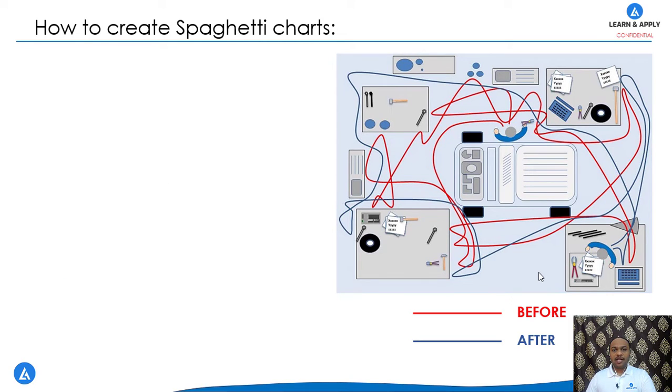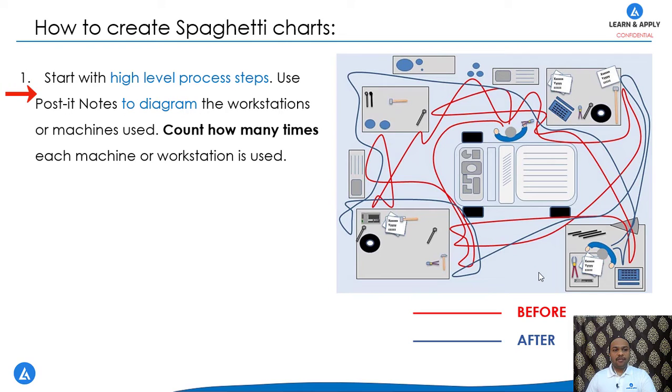To create the spaghetti chart, it consists of three steps. In first step, we start with the high level process step. We are going to use post-it notes to diagram the workstations or the machines used. In this step, we are going to count how many times each machine or workstation is used.